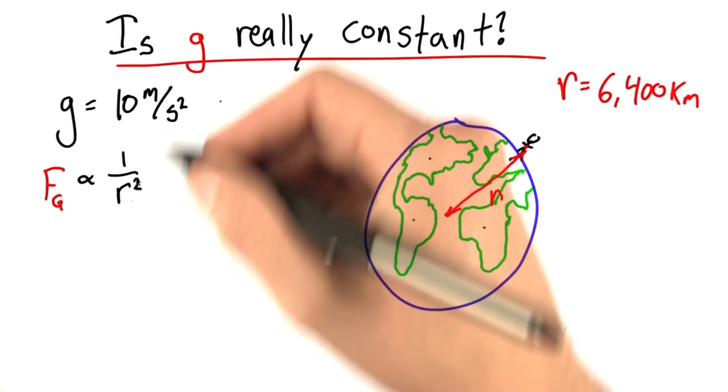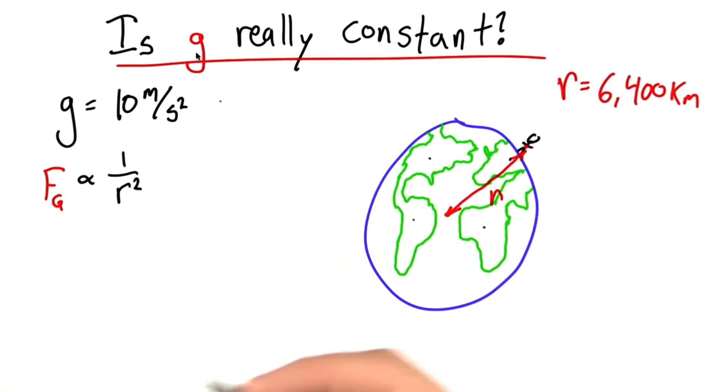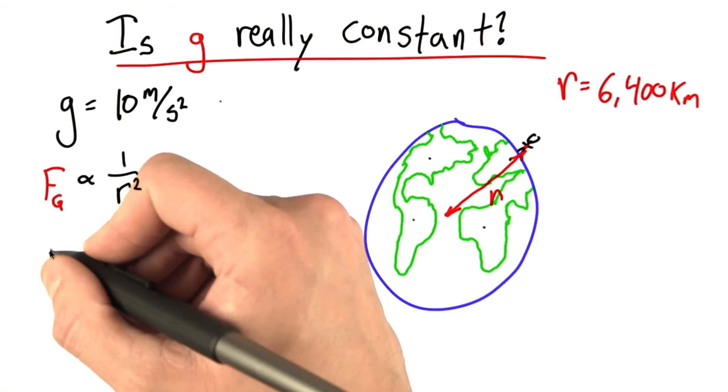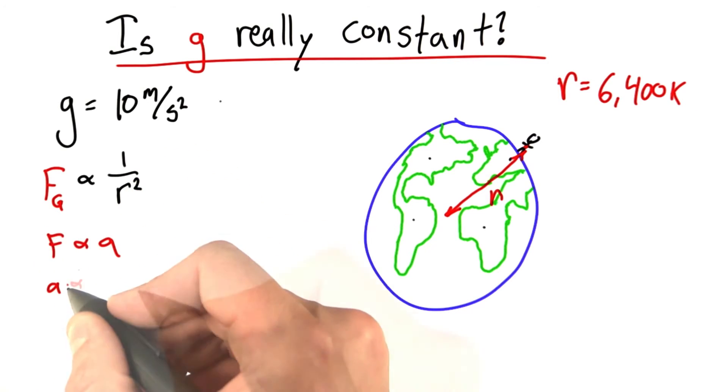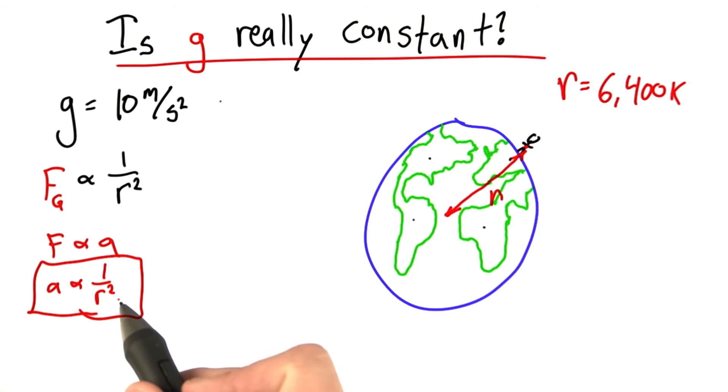Now remember, it's this force of gravity which is causing this acceleration due to gravity. And since force is proportional to acceleration, well that means that acceleration, like gravity, is proportional to 1 over r squared.